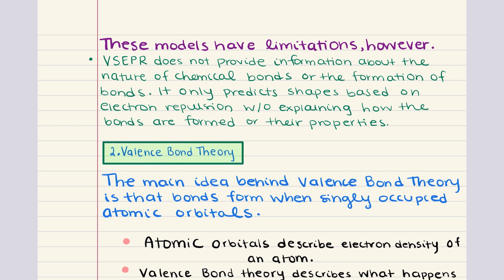Additionally, VSEPR theory does not account for the actual electron distribution or the dynamic nature of electron clouds. These limitations necessitate the use of valence bond theory, which offers a more detailed understanding of bonding by describing how atomic orbitals overlap to form covalent bonds.